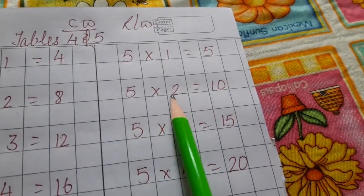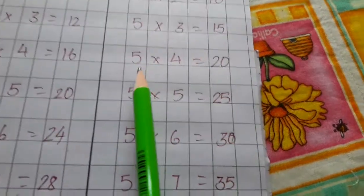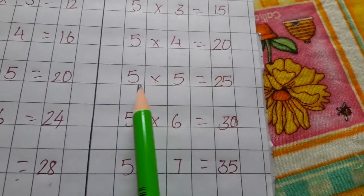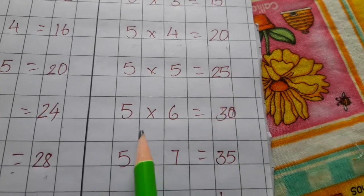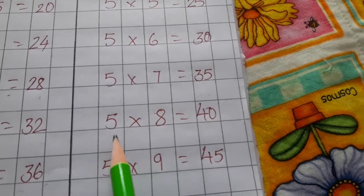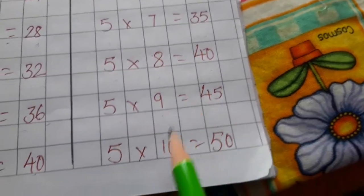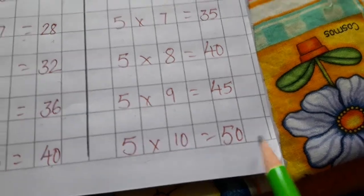5 ones are 5, 5 twos are 10, 5 threes are 15, 5 fours are 20, 5 fives are 25, 5 sixes are 30, 5 sevens are 35, 5 eights are 40, 5 nines are 45, 5 tens are 50.